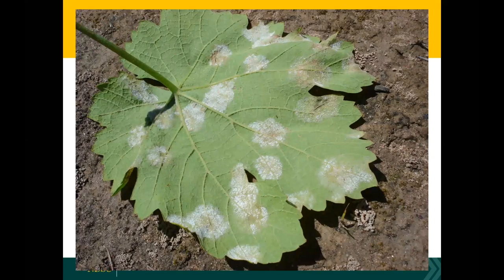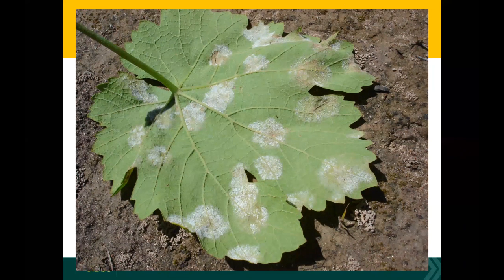If you look at the underside of a leaf, that's where you're going to see the pathogen sporulating. Sometimes people confuse this with powdery mildew, understandably, but downy mildew is usually a bit more circular and primarily appears on the underside of the leaf, as opposed to the top.